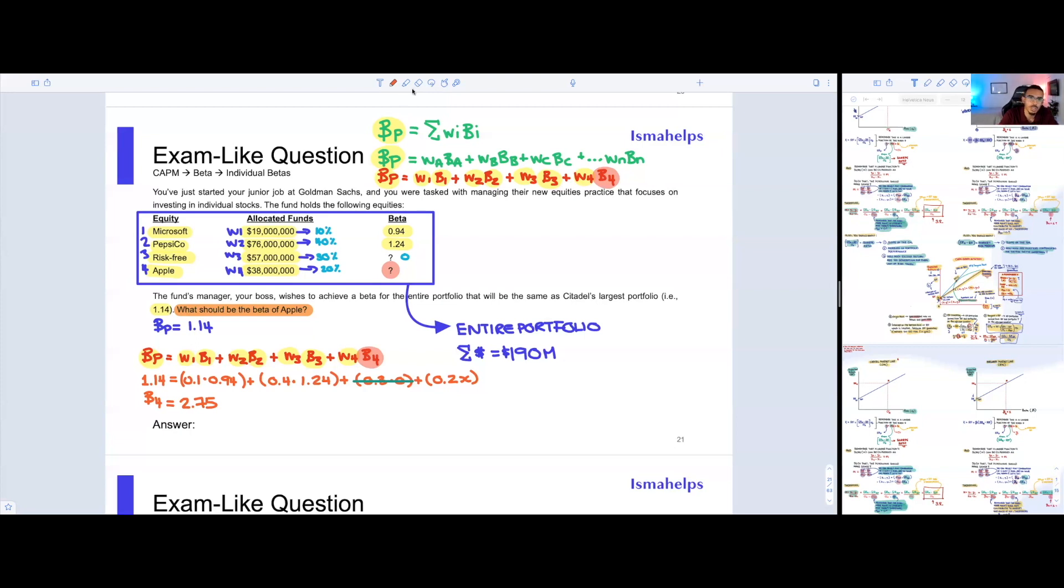This question really becomes a breeze once you know what to do. And what I'm going to do quick is I'm just going to verify that the inputs are correct. So 0.2 times 2.75, we're going to enter that and we get 1.14. That's solid. What I want you to understand is it's extremely important for you to always highlight what type of formula you need when doing this type of problem. This one, we're looking for the individual, a very unique beta. That was the beta of Apple. You had all the information in the world. You literally only had to do one computation other than finding the weights.